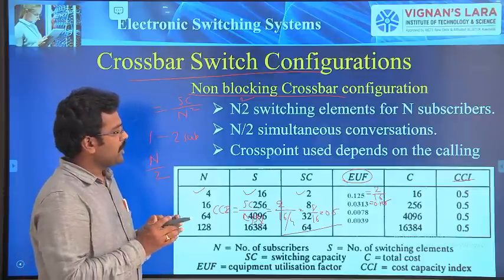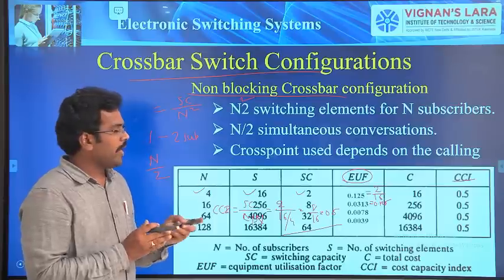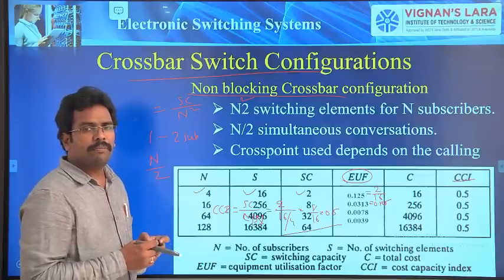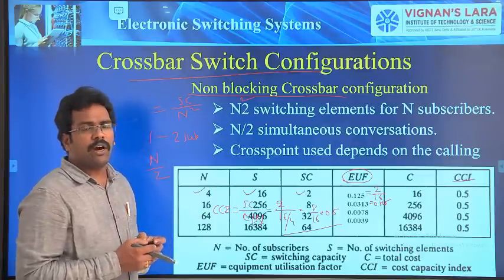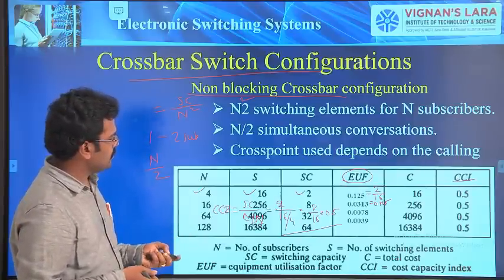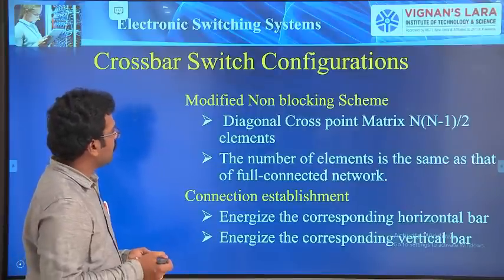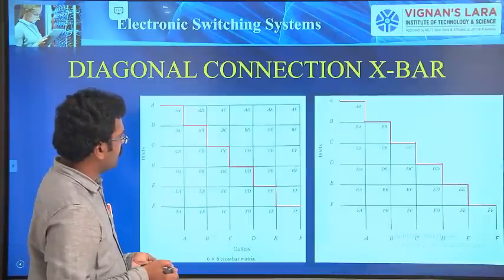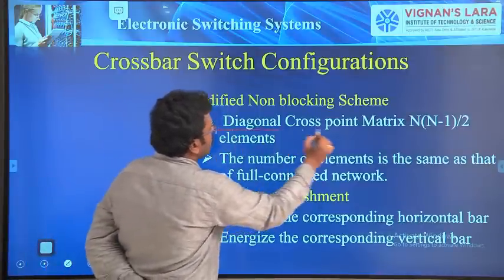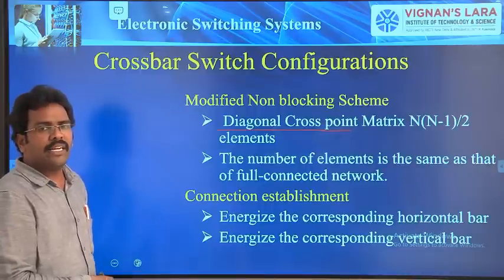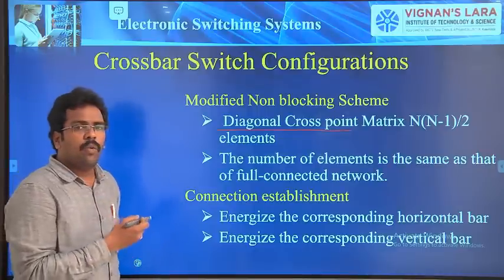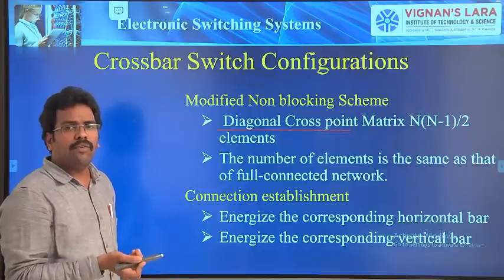Now, our objective is to improve the utilization factors. There are 3 methods proposed to improve the utilization factor, or how to decrease the number of switching elements. The first one is using a diagonal cross-point matrix. In this case, what we are trying to do is reduce the number of cross-points.